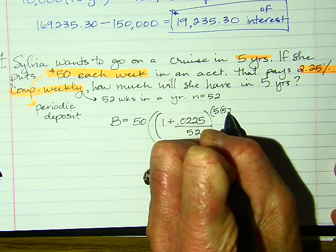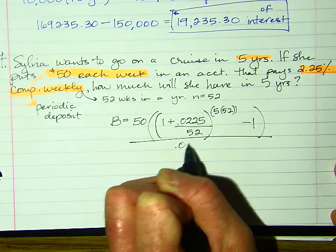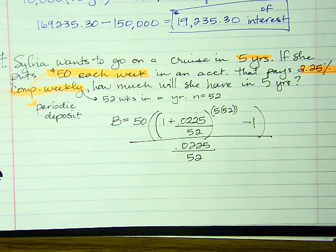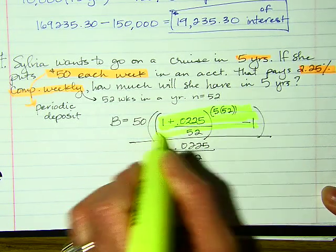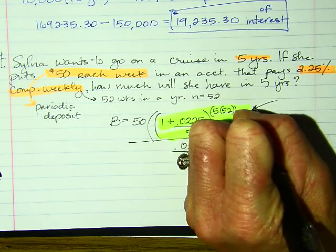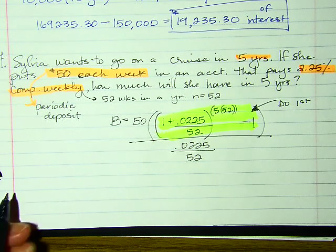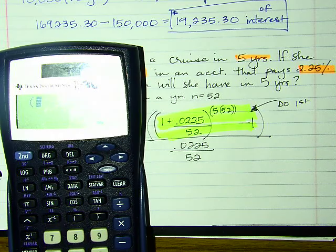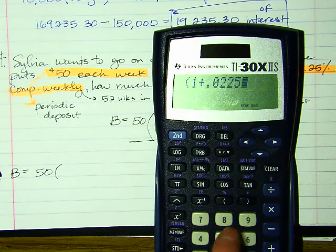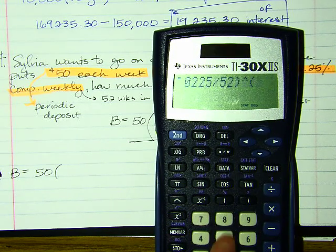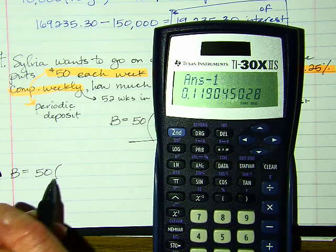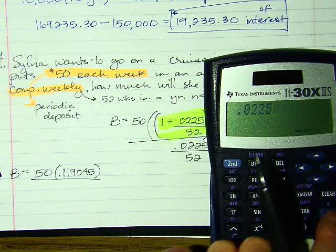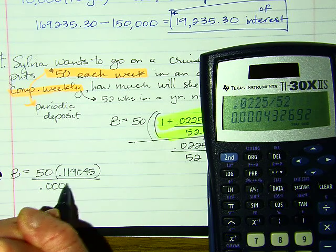The formula is: B = 50 × [(1 + 0.0225/52)^(52×5) − 1] / (0.0225/52). I do the inside of the parentheses first. Entering (1 + 0.0225/52)^260 − 1, I get approximately 0.119045. Then I simplify the bottom: 0.0225/52 = 0.000433.